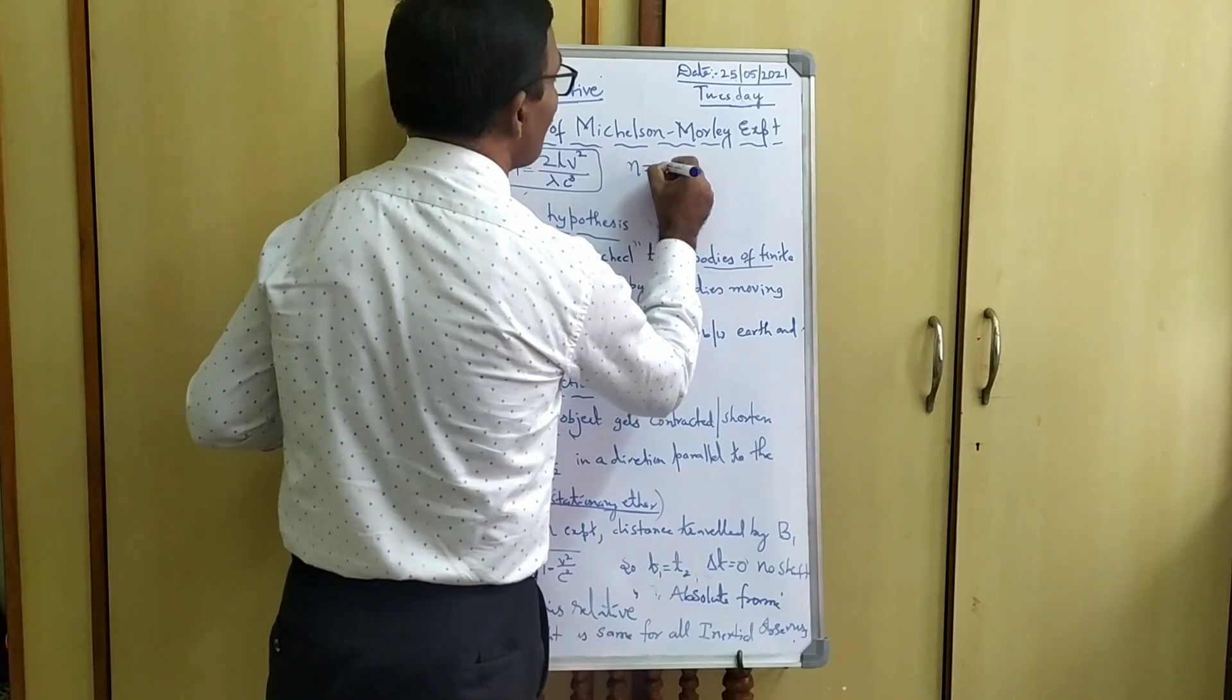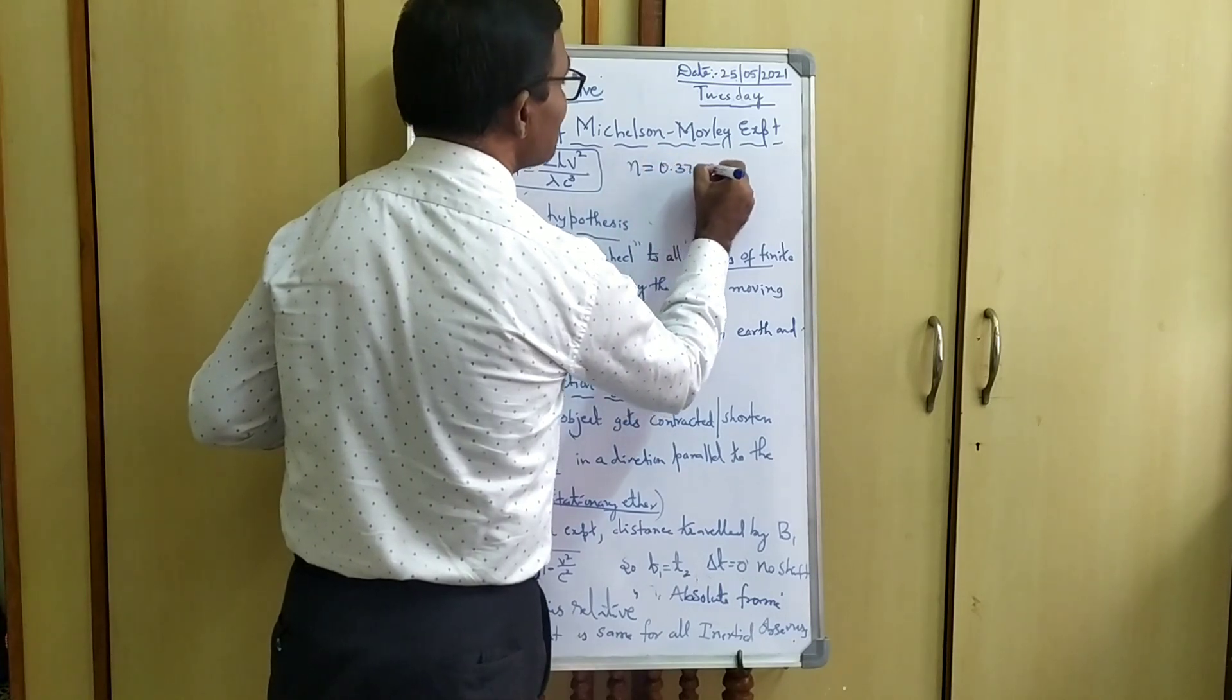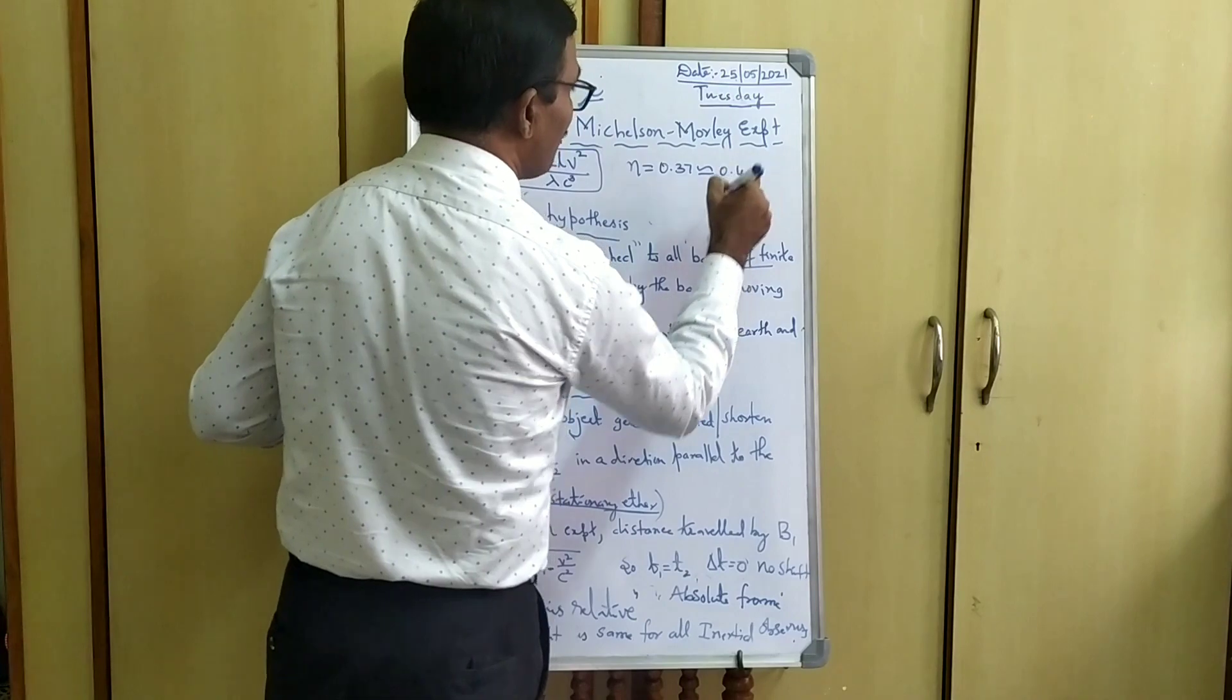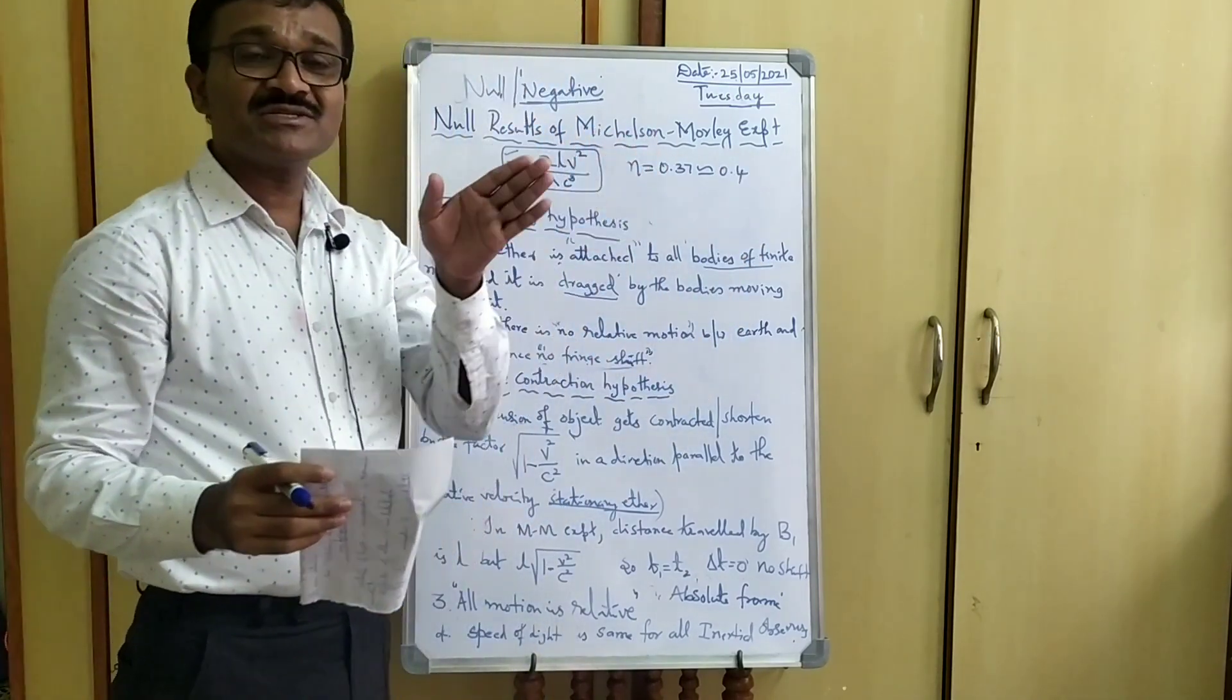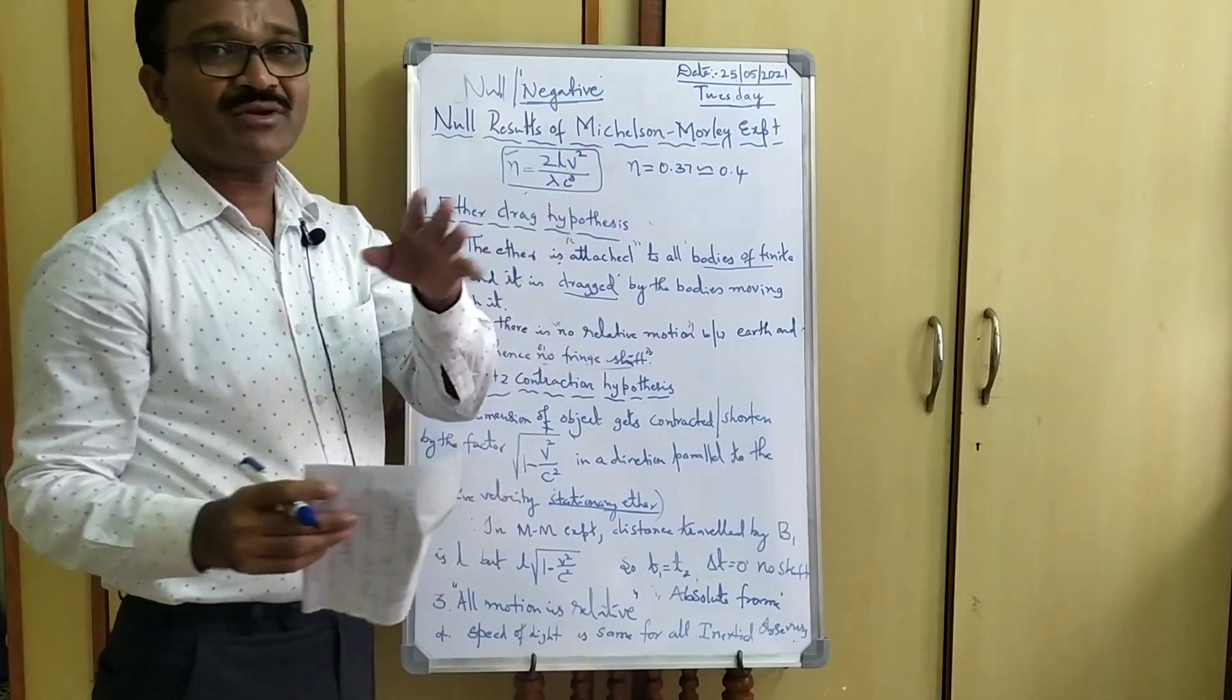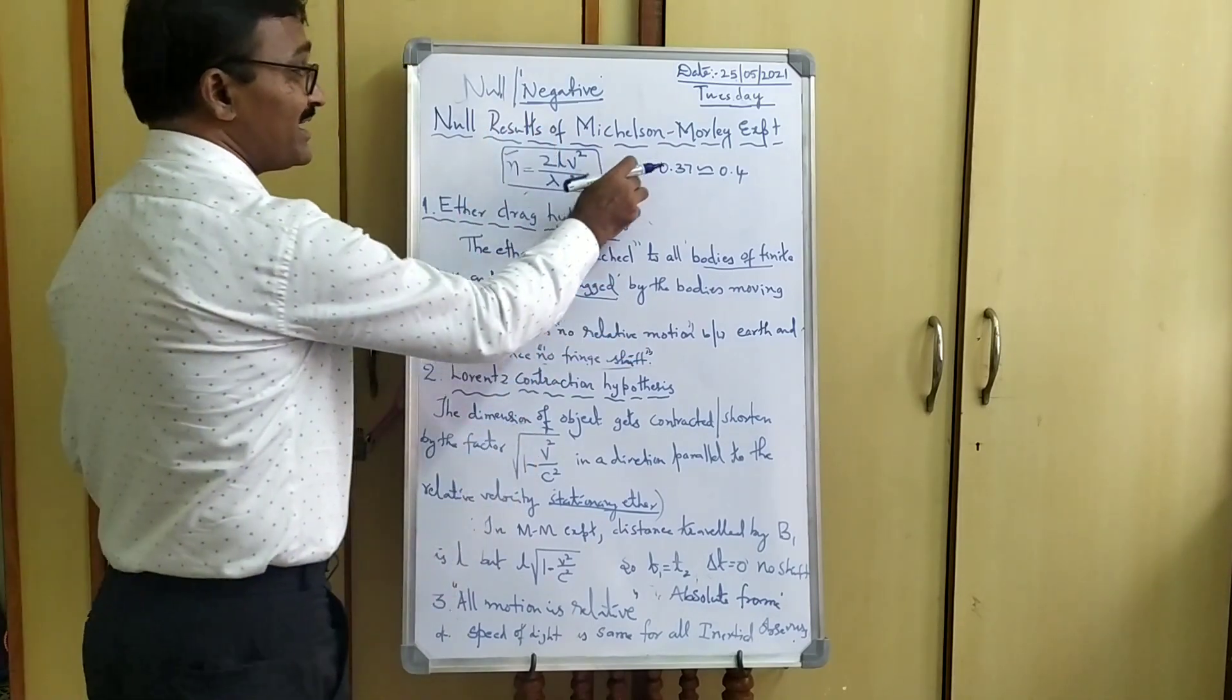N is equal to 0.37 which is nearly equal to 0.4. This much of fringes are going to shift by the particular mark according to theory.